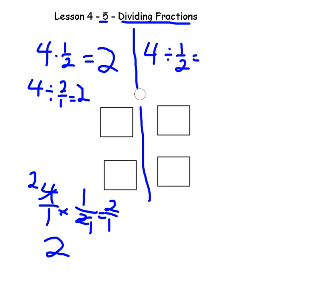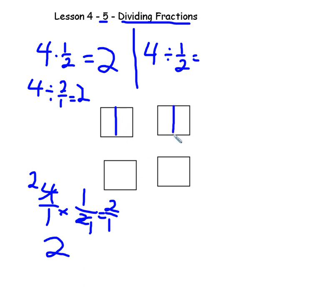Let's take a look at division, because we're going to use that inverse operation. 4 divided by 1/2: we have 4 items — 1, 2, 3, 4 — and we're dividing them into halves. How many pieces do I have if I divide them into halves? I get 1 through 8. So 4 divided by 1/2 is 8.